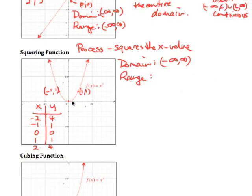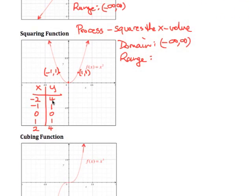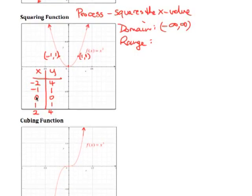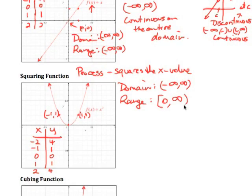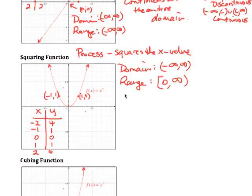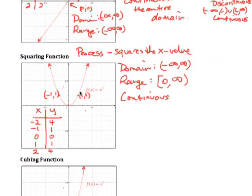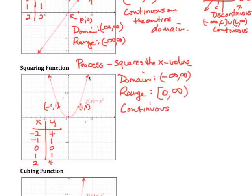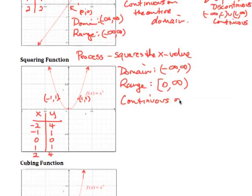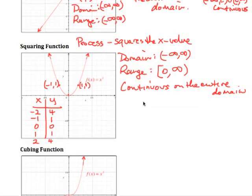The domain is all real numbers, since we can square any real number. For the range: being a squaring function, whenever we square a number we get a positive answer, so the smallest value we get is 0 and everything after that is positive — so the range is 0 to infinity. This function is continuous on the entire domain, since we can trace over it without taking our pen off.